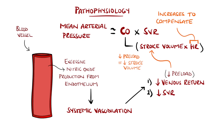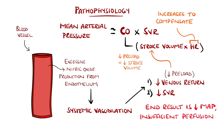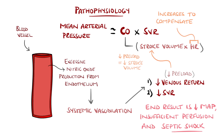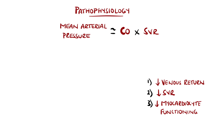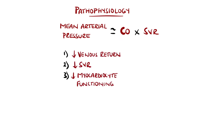The vasodilation also affects the arteries, reducing systemic vascular resistance. Put together, this means that the mean arterial pressure is reduced, and this lower blood pressure can therefore result in reduced perfusion to organs. When hypotension is severe enough, it is defined as septic shock, which is a form of distributive shock. On top of this, nitric oxide can also reduce myocardiocyte contractility directly, thereby reducing the ability of the heart to pump blood effectively.